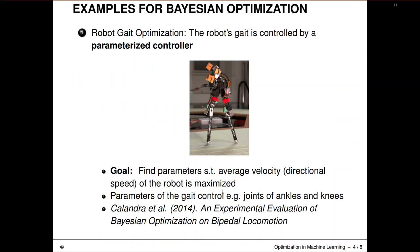Here are a few examples where people have used Bayesian optimization. For example, there's a robot gate optimization scenario. Here we have a robot and the robot's gate is controlled by a parameterized controller. We want to find the parameters that maximize the average velocity of our robot. In this case, we do not simulate the robot. We configure the controller, let the robot run around, and maybe the robot will even break if we run too many experiments. So it's pretty obvious that we have to operate on a very tightly constrained budget.